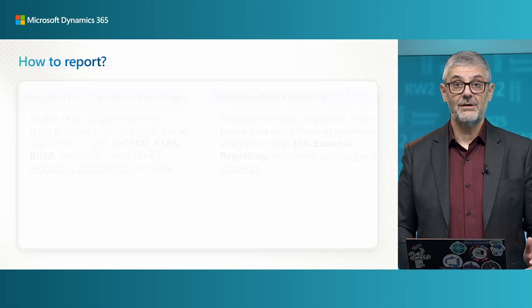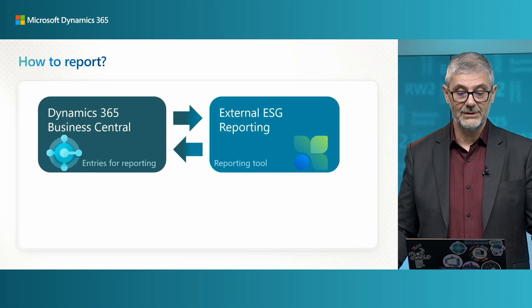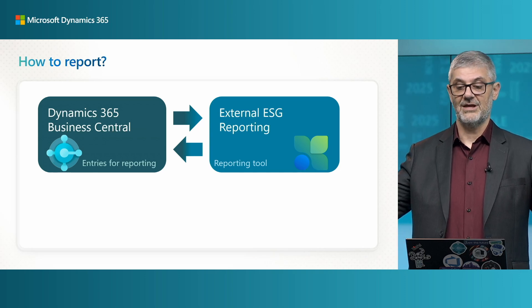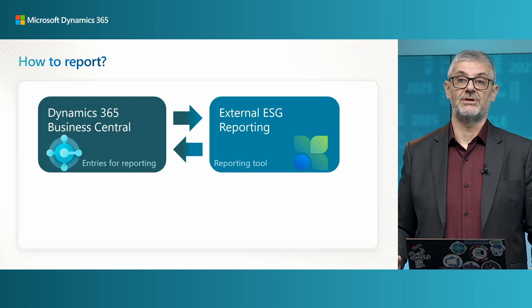When I say both worlds — how will you report? We have on one side Business Central and on the other side we have external ESG reporting. We are using Business Central for entering all sustainability information. We have our sustainability ledger entry. But this reporting is not only about sustainability information, not only environmental. This is ESG, so we have social and governance — you can use information from employees, statistical accounts, different sources, financials, and so on. All our entries are in Business Central, and we will transfer them into the external ESG reporting tool and report from there.